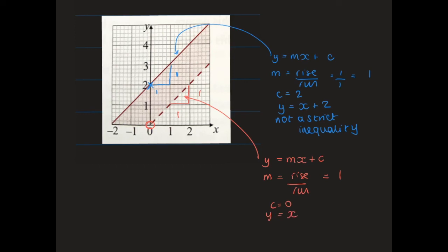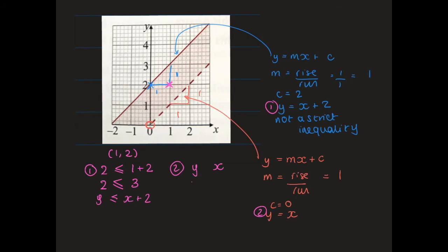The shaded region is above the y equals x line and below the y equals x plus 2 line. Taking the test point (1, 2): substituting into y equals x plus 2 gives 2 in relation to 3 — since 2 is less than 3 and the line is solid, the inequality is y is less than or equal to x plus 2. Substituting into y equals x gives 2 in relation to 1 — since 2 is greater than 1 and the line is dashed, the inequality is y is greater than x. The final answer is: y is greater than x and y is less than or equal to x plus 2.